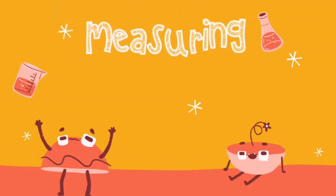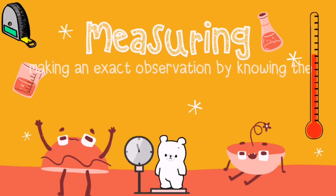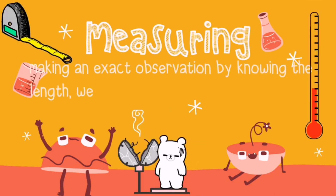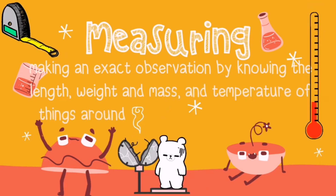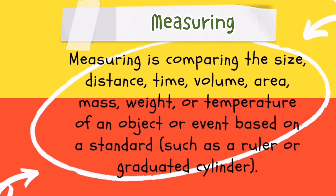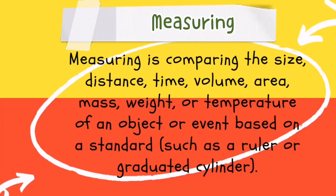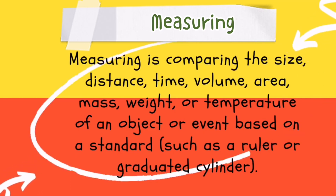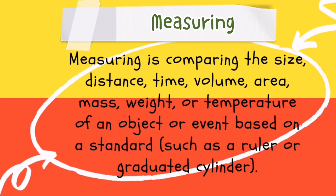Next is measuring. This is making an exact observation by knowing the length, weight and mass, and temperature of things around us using an instrument or a device. Again, measuring is comparing the size, distance, time, volume, area, mass, weight, or temperature of an object or event based on a standard, such as a ruler or a graduated cylinder.